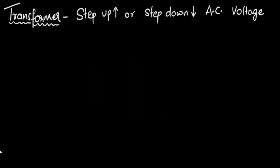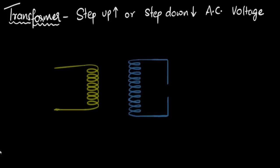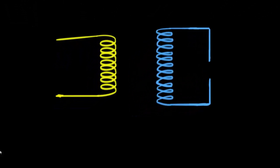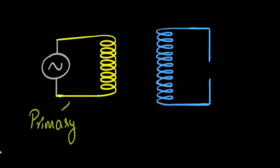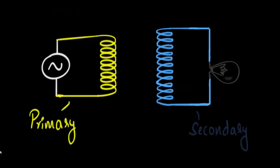Okay, what does that mean and how does it work? Well at the core, the transformer is basically just two coils kept close to each other. One which is connected to the supply, an AC supply, is called the primary coil. And the other which is connected to some device which we want to run, we'll call that the secondary coil.